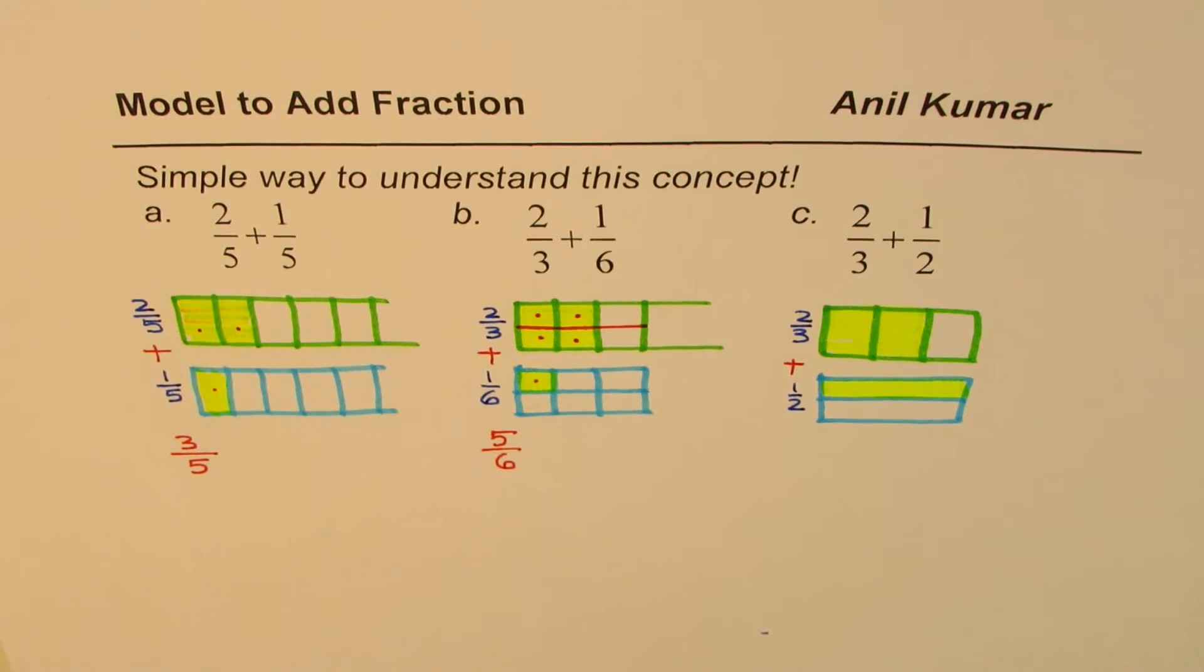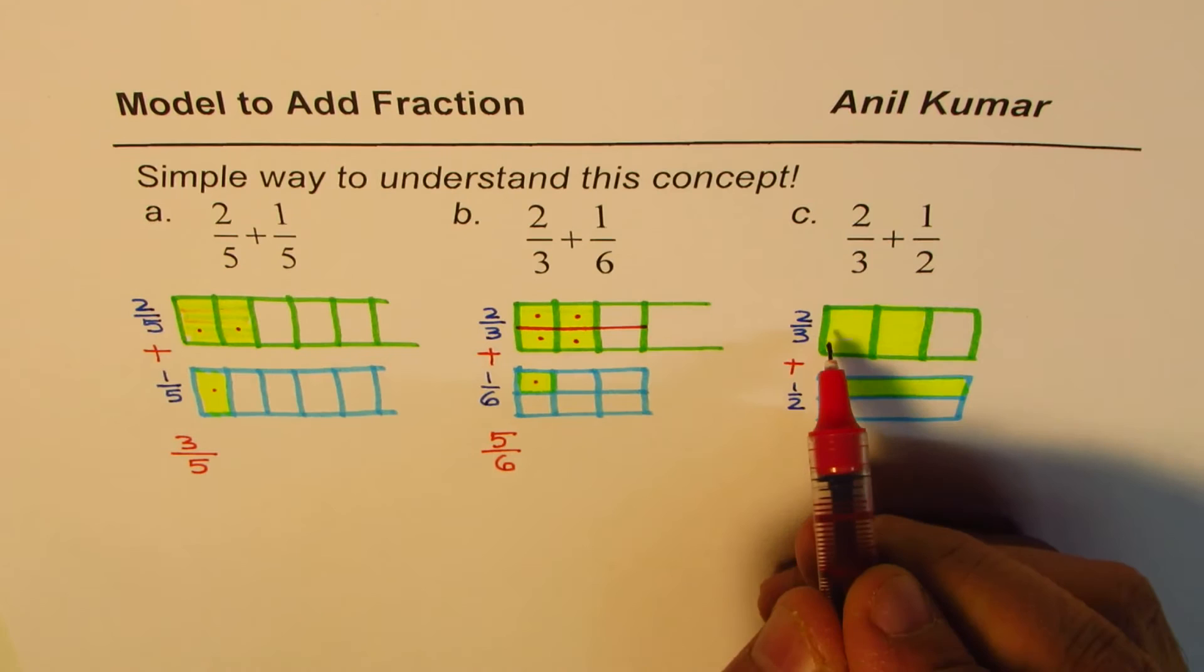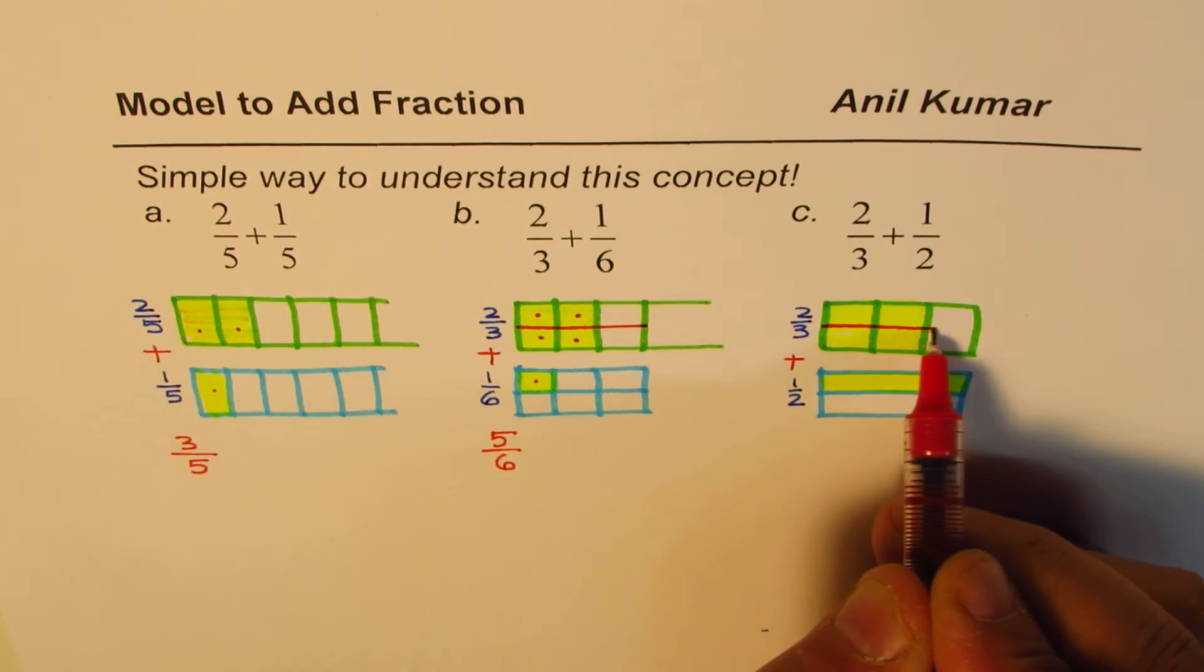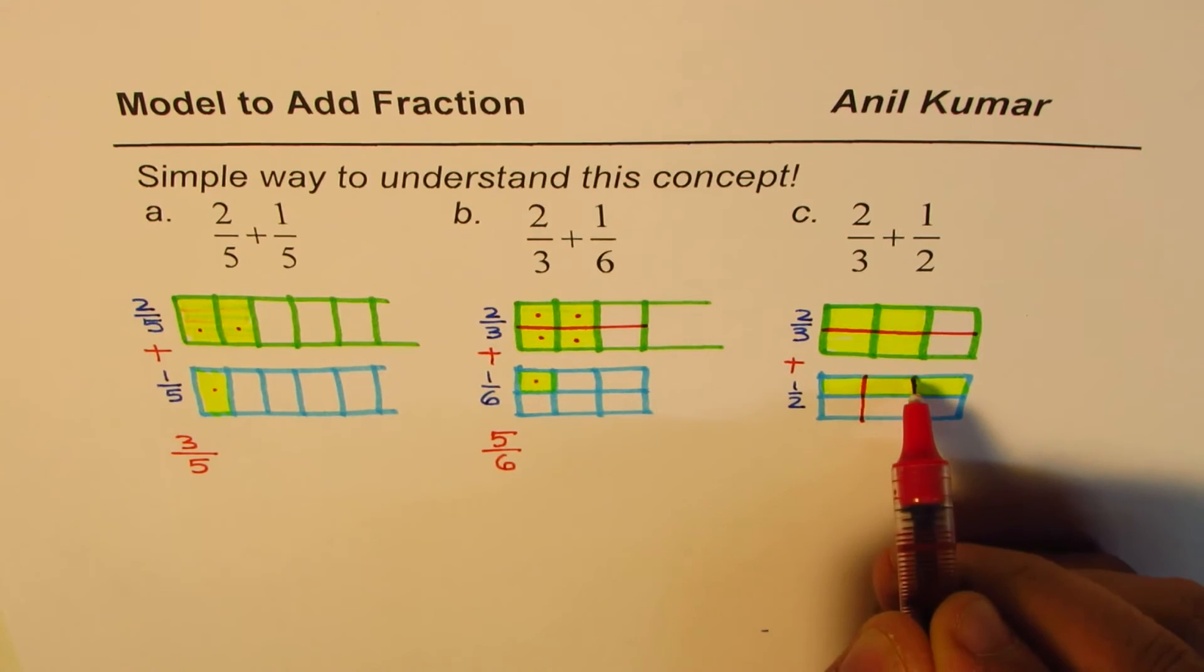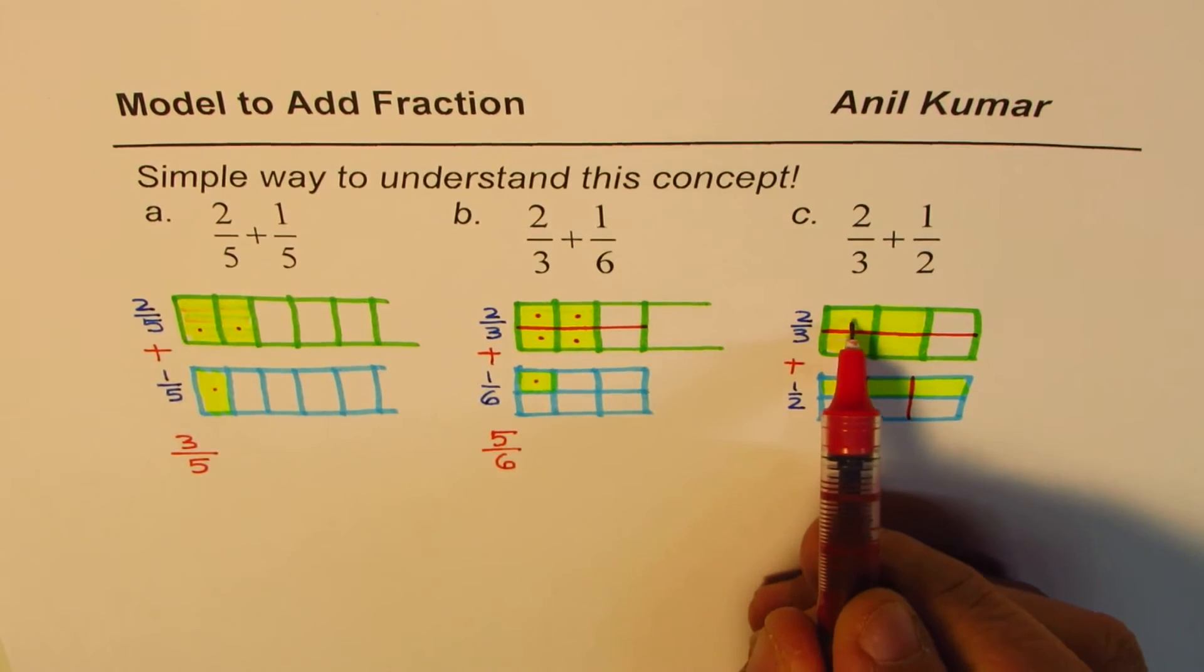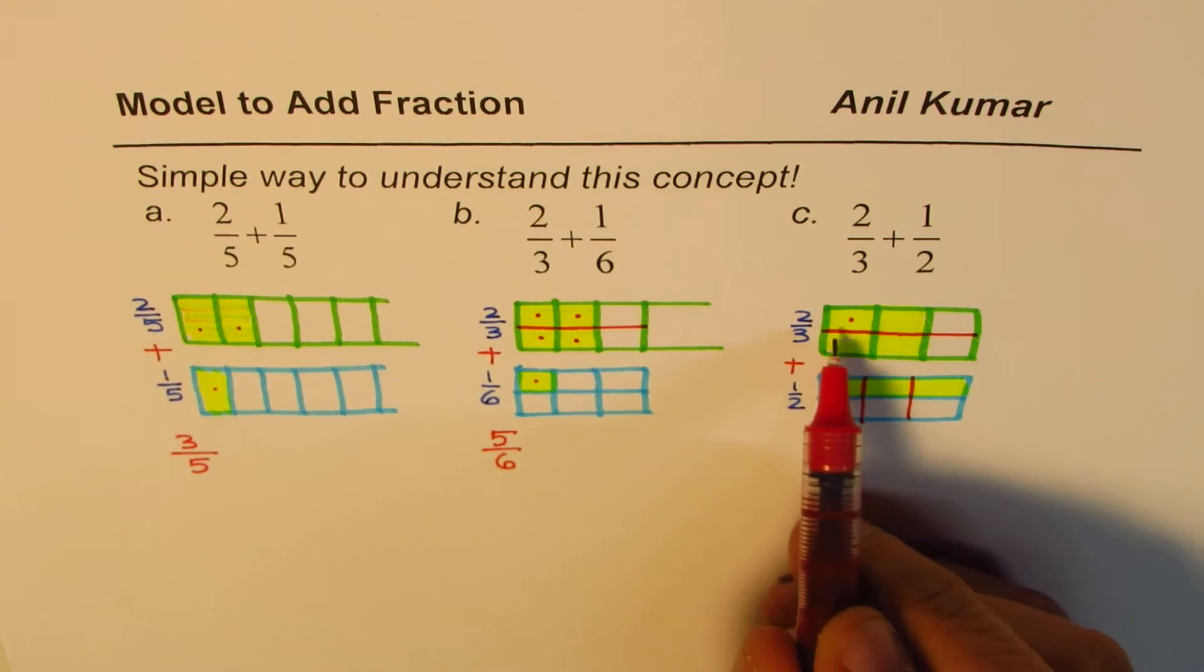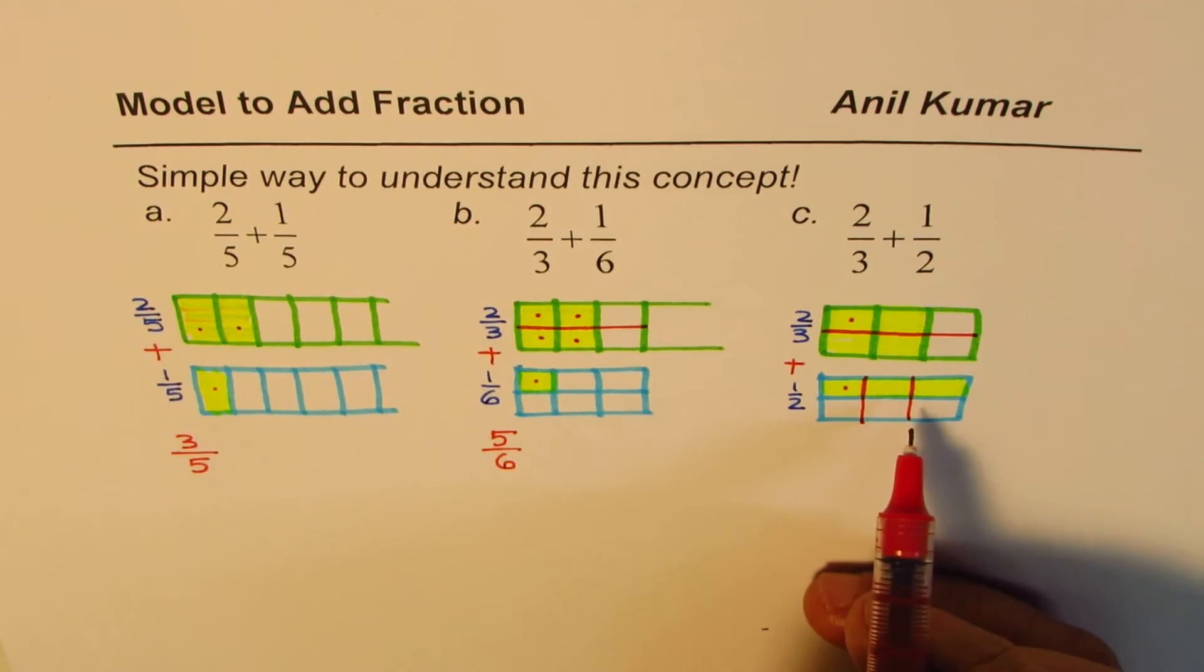That is tricky. What we can do is that we can divide the earlier one into half and this one into thirds. Then what do we get? 1 out of 6. Do you see there are 6 equal parts? So each part is 1 sixth.